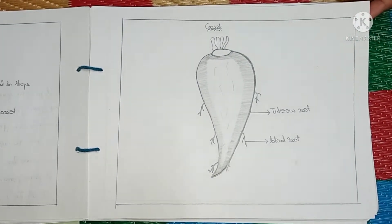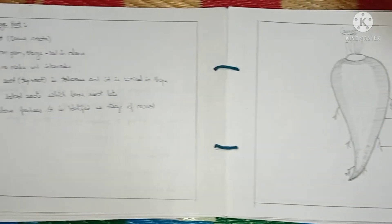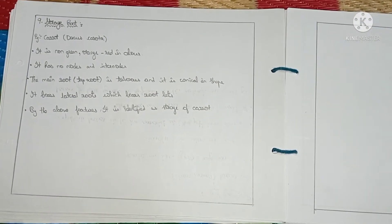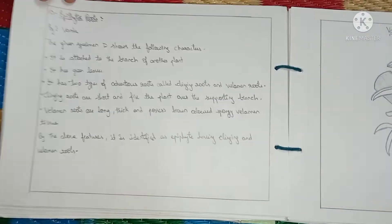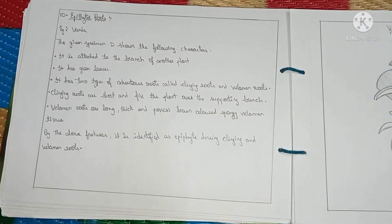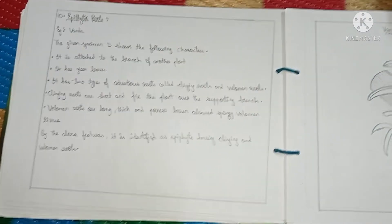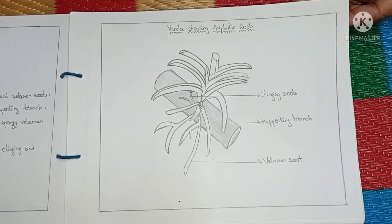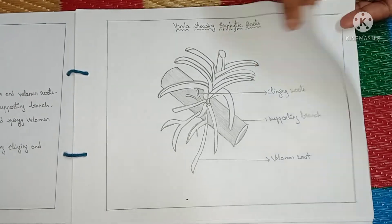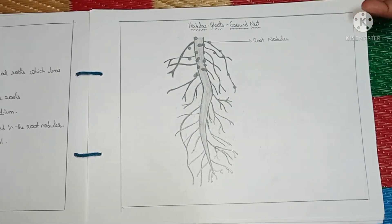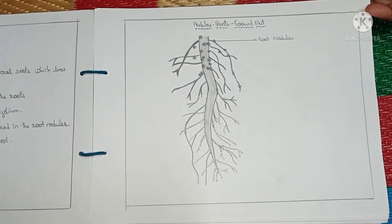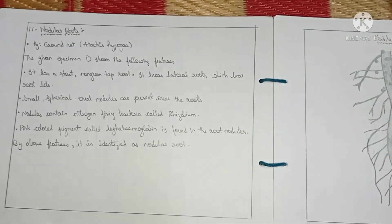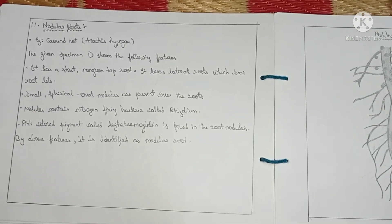Modified roots include: storage root with carrot as the example — diagram and details of carrot. Epiphytic roots, with Vanda as the example. Nodular roots, with gram as the example — diagram and details of nodular roots with gram.